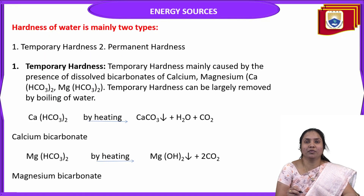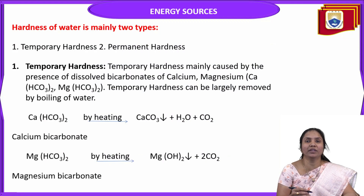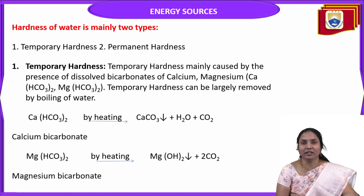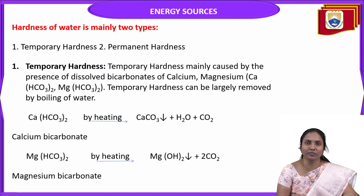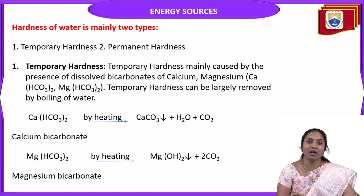Before we discuss the problems, let's first understand what is hard water. Generally, water containing hardness-causing salts like calcium, magnesium bicarbonates, chlorides, sulphates, and nitrates — both temporary and permanent hardness-causing salts — is considered hard water. When we treat it with soap, it doesn't produce lather.